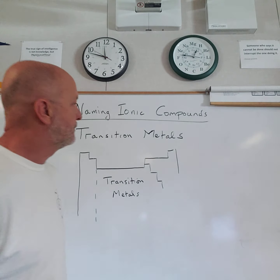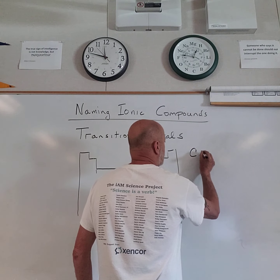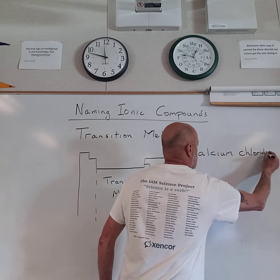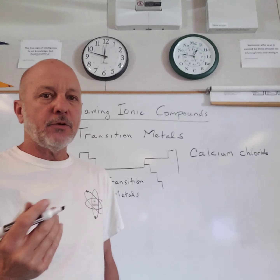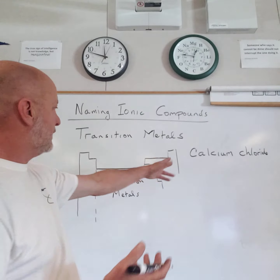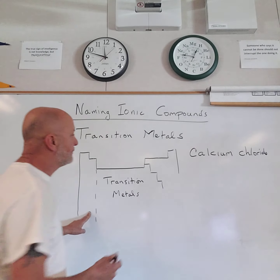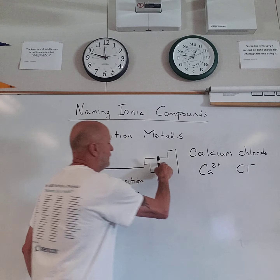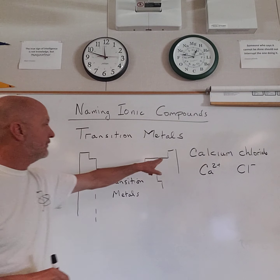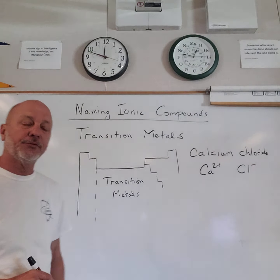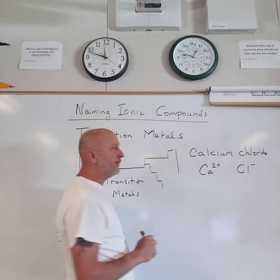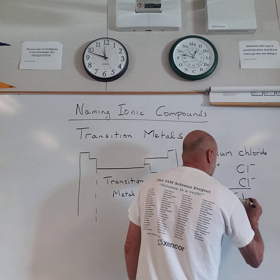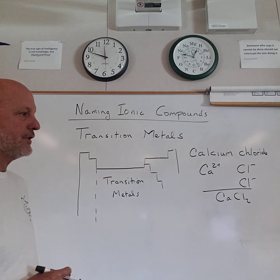For example, if I say write the formula for calcium chloride, we can do that. Calcium is in the second column, so it's always two-plus. Chloride — non-metals are consistent — chloride is in this column, and all of these form single-minus. So knowing the charges of both ions, we combine them to make a neutral compound. I need two chlorines for every one calcium. Metal always comes first, then the non-metal.